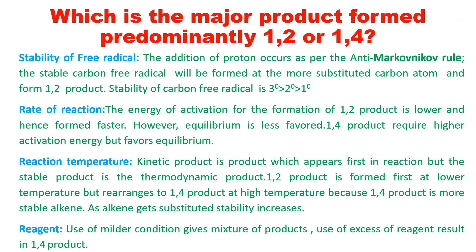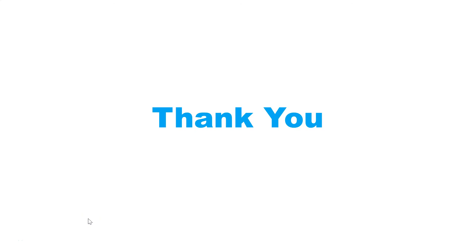When excess of reagent is used, we will get the 1,4 kind of product. Under milder reagent conditions we get the 1,2 product. So these are the four parameters — stability of free radicals, rate of reaction, temperature, and excess of reagents — that determine whether 1,2 or 1,4 addition will predominate. Thank you for watching the video; if you have any doubts you can comment in the comment section and I will definitely answer.